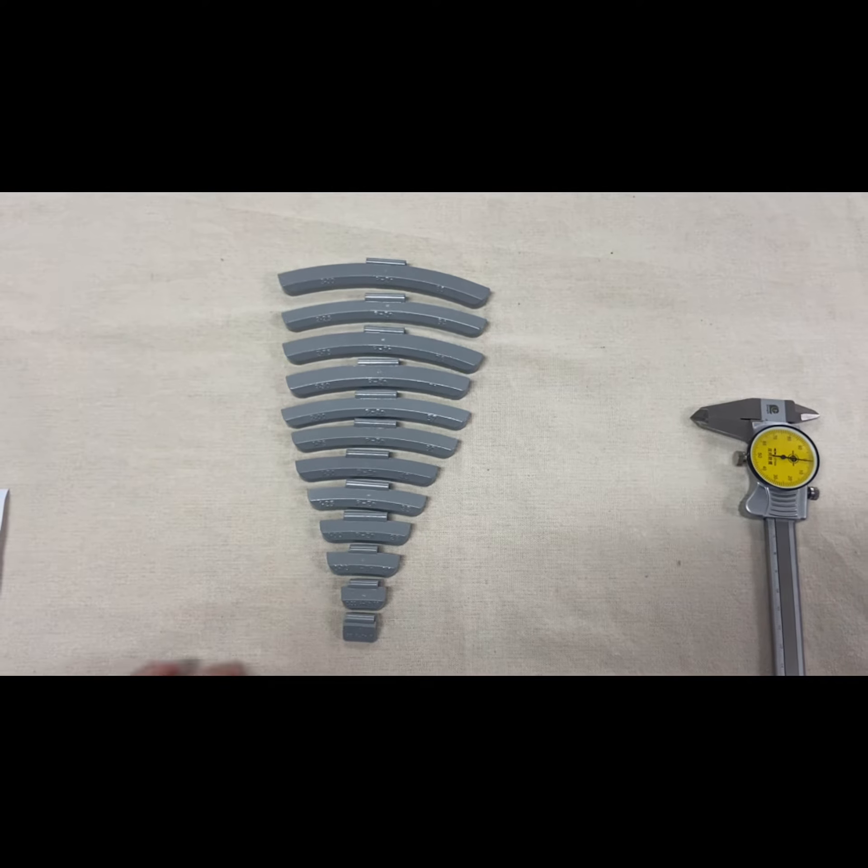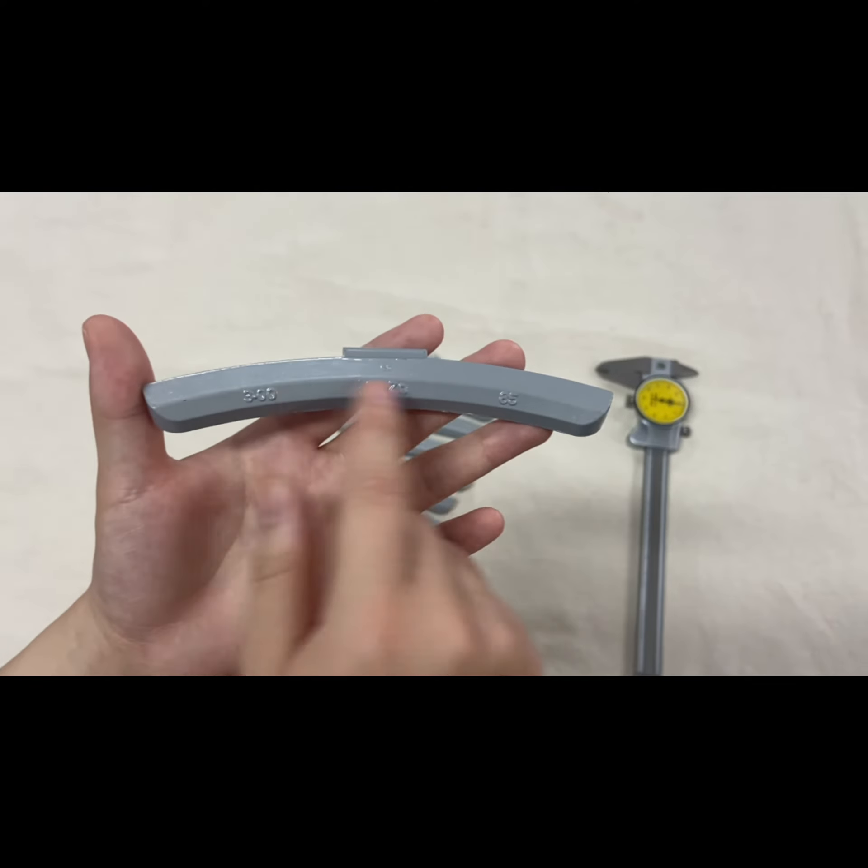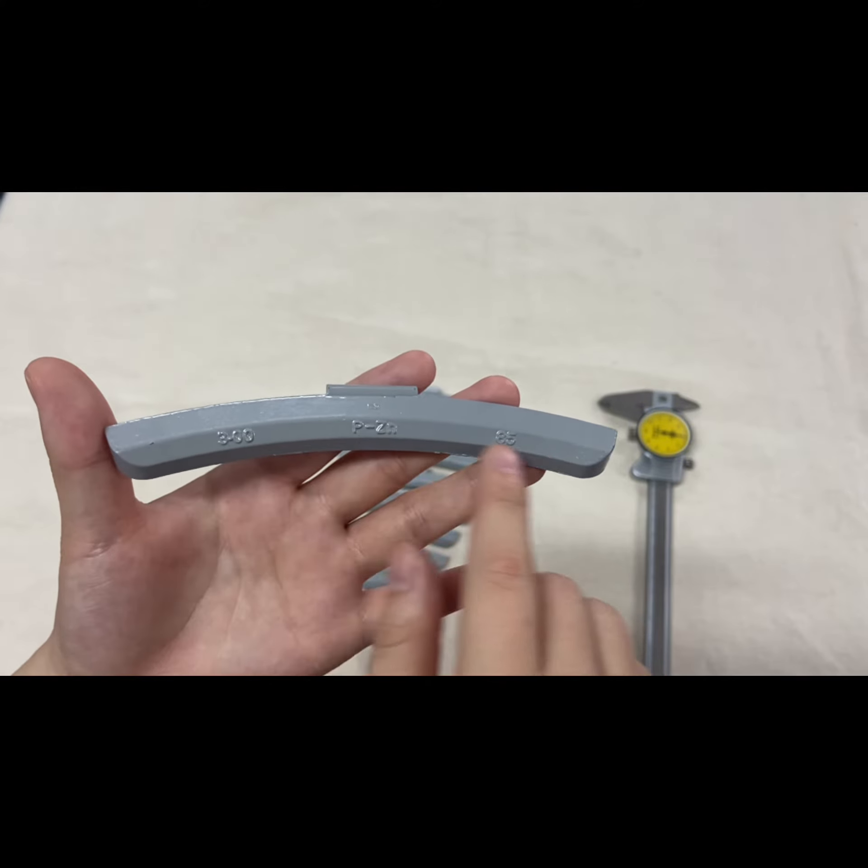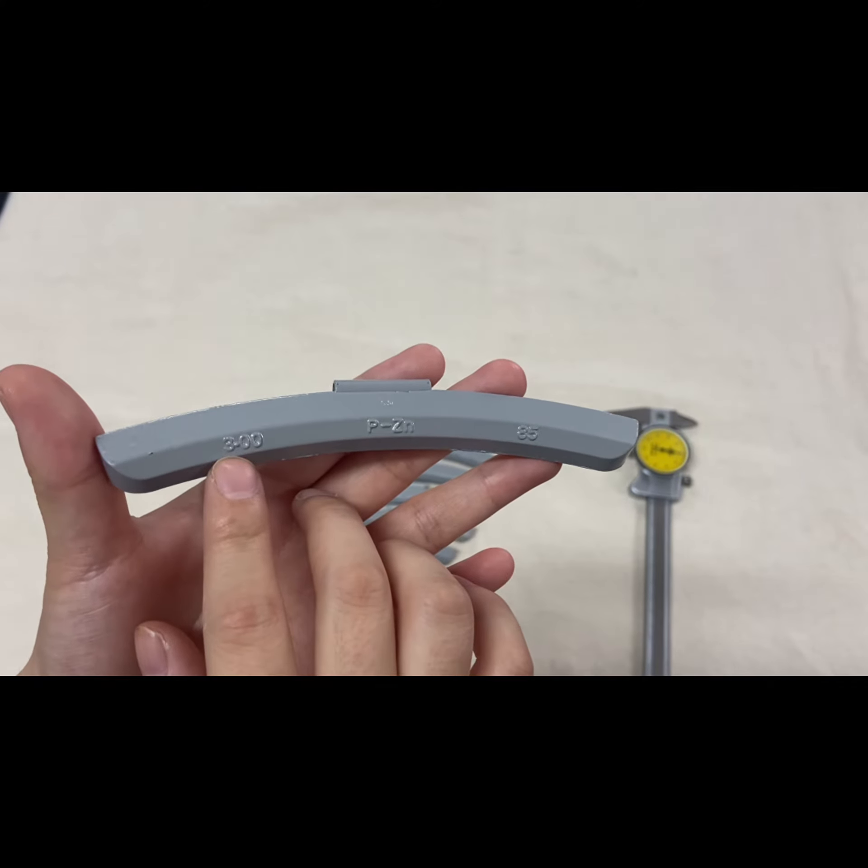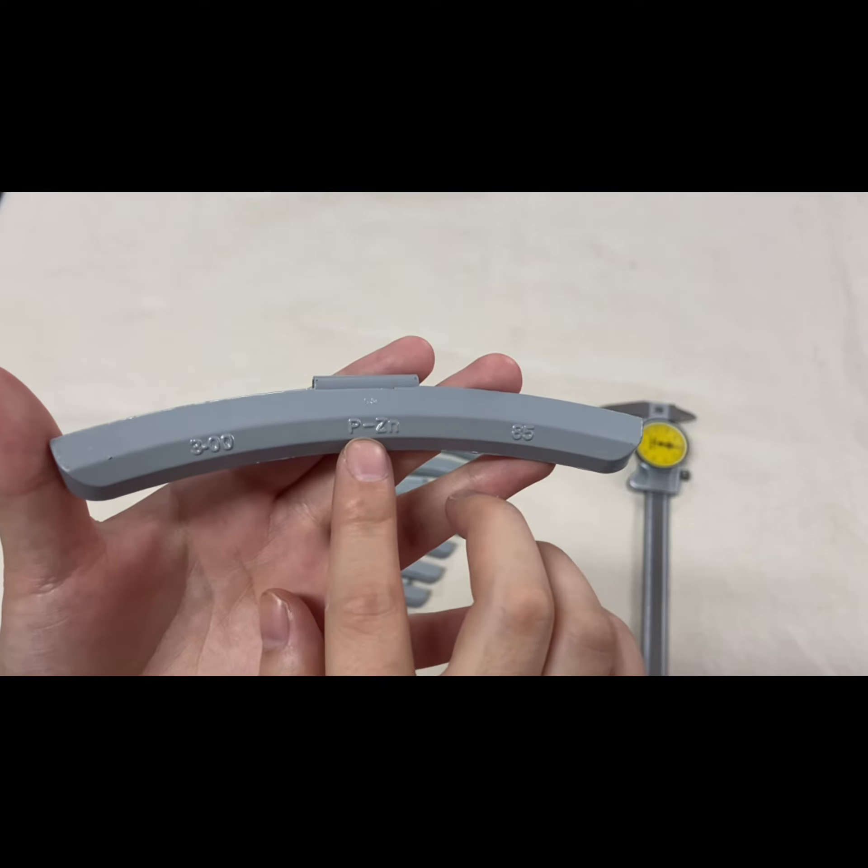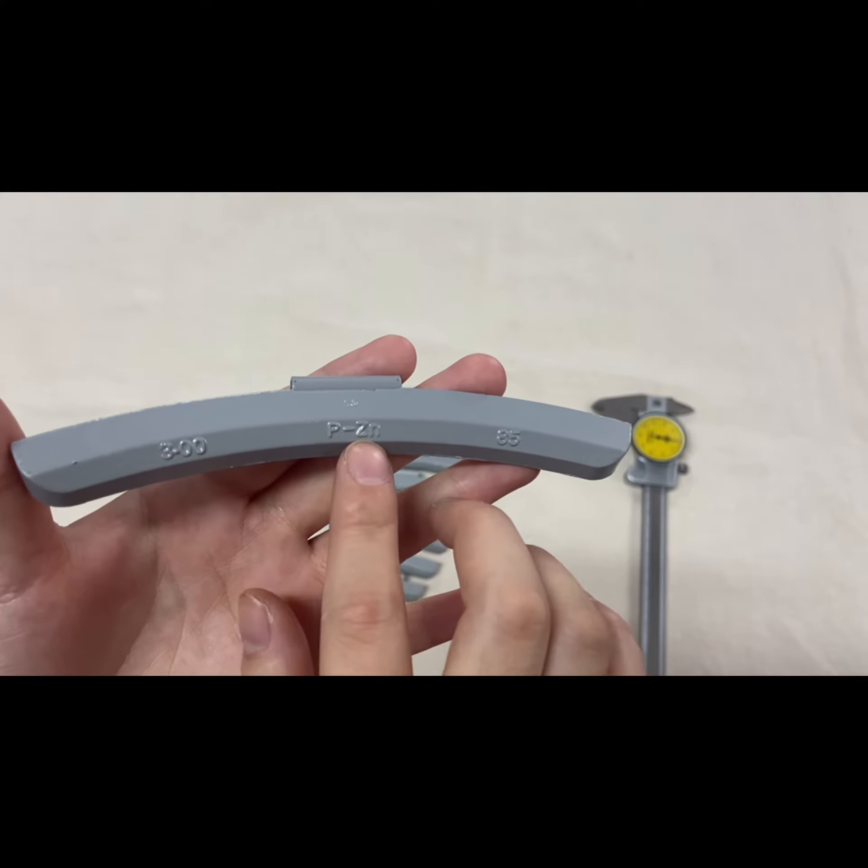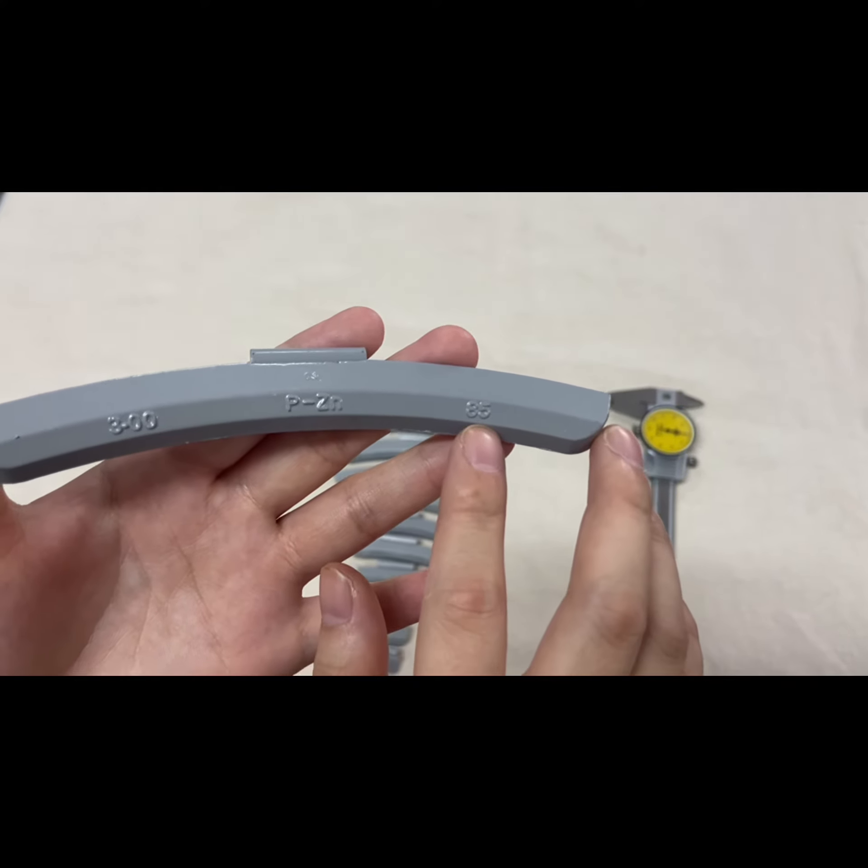This is the P-tap series. Look at our products. This surface is smooth and is 3 ounces. This is PZN material and weighs 85 grams.